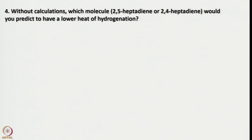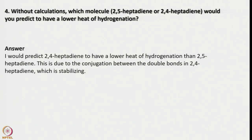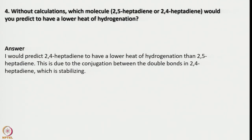Now, without calculations, simply by reading you should be able to answer: which molecule, 2,5-heptadiene or 2,4-heptadiene, would you predict to have a lower heat of hydrogenation? If you write the molecular formula, you can notice that in 2,4-heptadiene we have conjugation. If conjugation is there, the π-π* gap lowers; as a result, reactivity increases. That means for hydrogenation, it needs a lower heat of hydrogenation. So I would predict 2,4-heptadiene to have lower heat of hydrogenation than 2,5-heptadiene. This is due to conjugation between the double bonds in 2,4-heptadiene, which is stabilizing. While discussing UV spectroscopy, we did mention that extensive conjugation brings the HOMO-LUMO gap down — one should remember that.